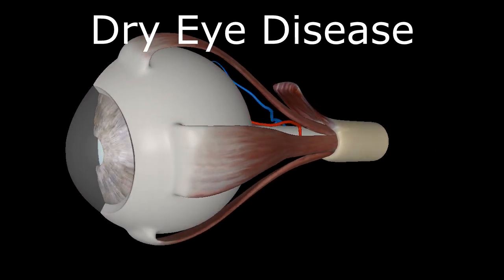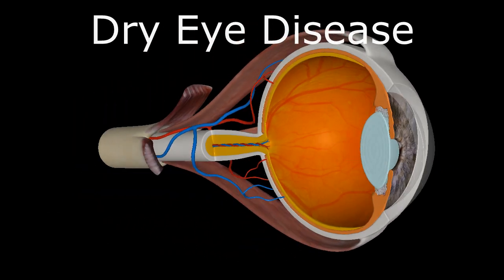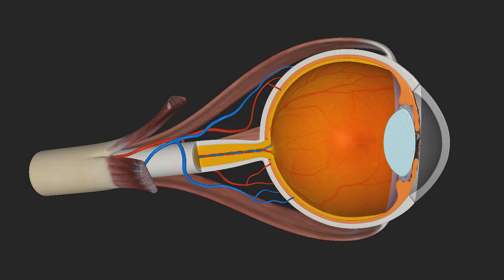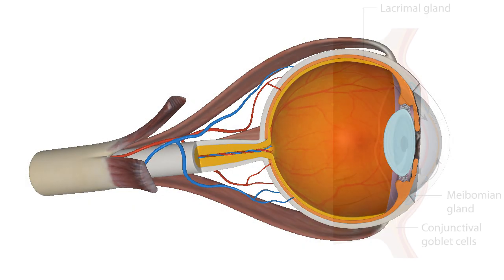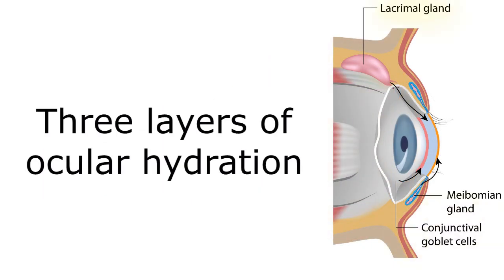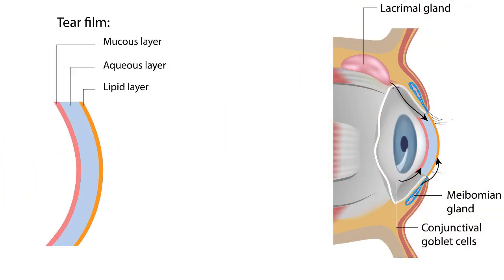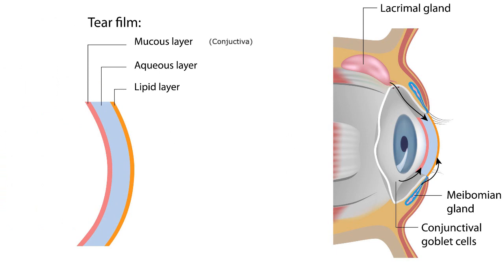There are three main components of ocular hydration provided by the conjunctival goblet cells, lacrimal glands, and meibomian glands, producing a mucous layer, aqueous layer, and lipid layer respectively. Damage to any one of these structures can lead to dry eye disease.